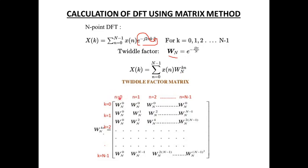The rows of the twiddle factor matrix represent n equal to 0 to N−1, and k represents 0 to N−1. The twiddle factor matrix element Wn^(kn) represents the twiddle factor for a combination of k as well as n.